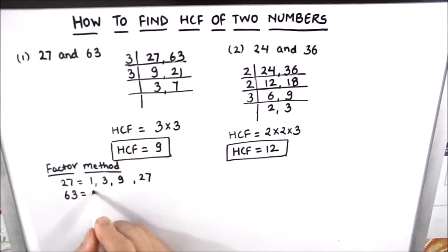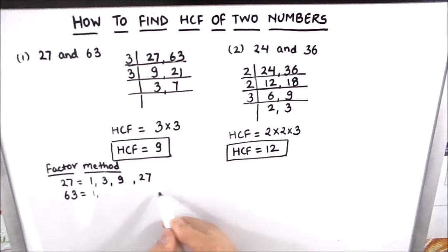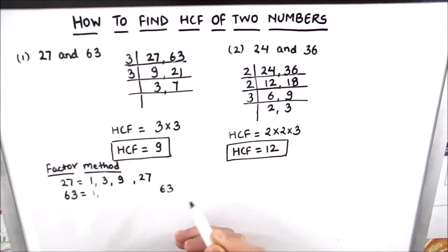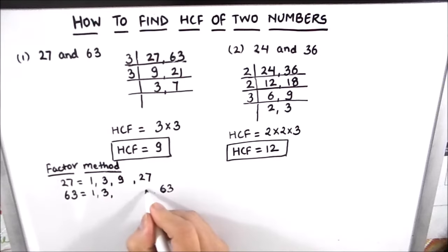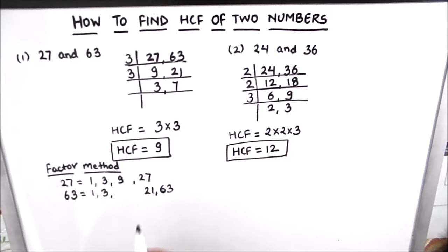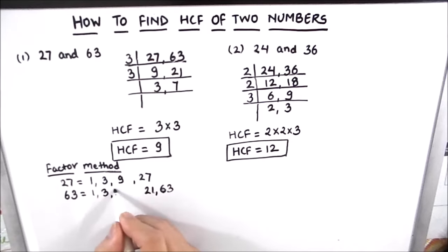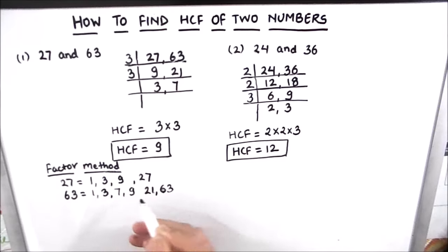Next, for 63: 1 and 63 make a pair. 2 is not a factor. 3 times 21 is 63. The other factors are 7 and 9, since 7 times 9 is 63. So all the factors of 63 are 1, 3, 7, 9, 21, and 63.